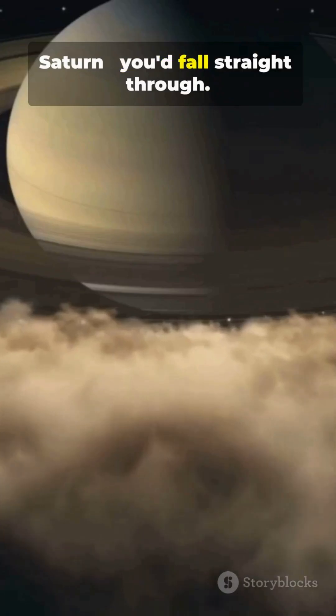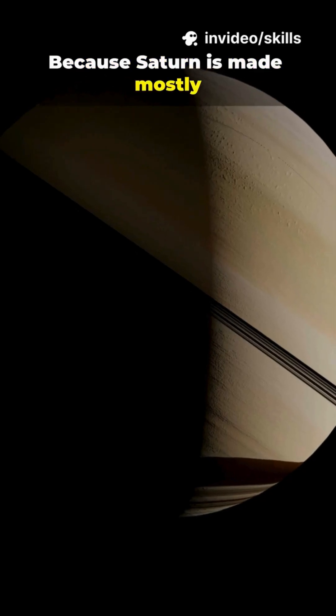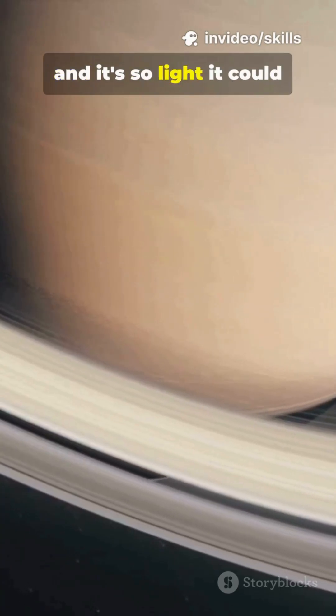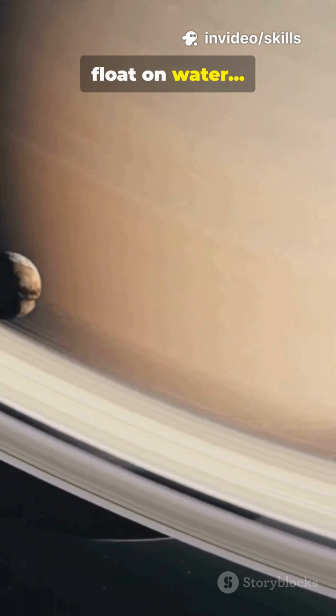If you tried to stand on Saturn, you'd fall straight through. Because Saturn is made mostly of gas, and it's so light it could float on water. If only you could find an ocean big enough.